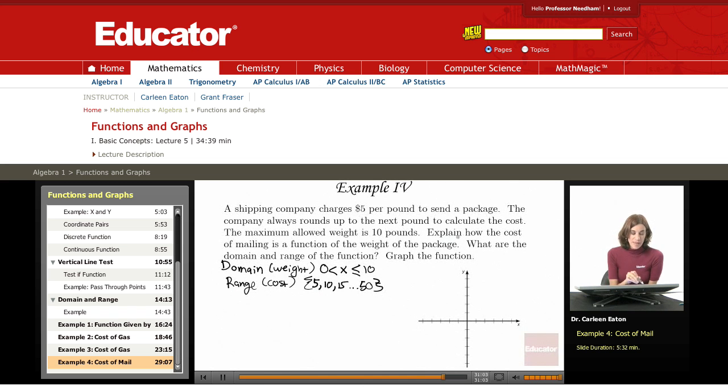Now, explain how the cost of mailing is a function of the weight of the package. Well, the cost of mailing depends on the weight of the package. So if my X value is weight and my Y is the cost, I have X as my independent variable and Y as my dependent variable. And the cost of mailing is a function of or is dependent on the number of pounds, the weight.